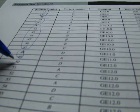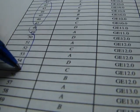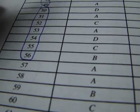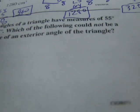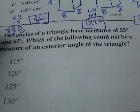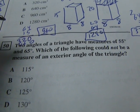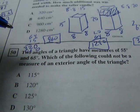So standard 12 will be problems 50 through 56. Let's look at problem 50. Two angles of a triangle have measures of 55 and 65. Which of the following could not be a measure of an exterior angle of the triangle?